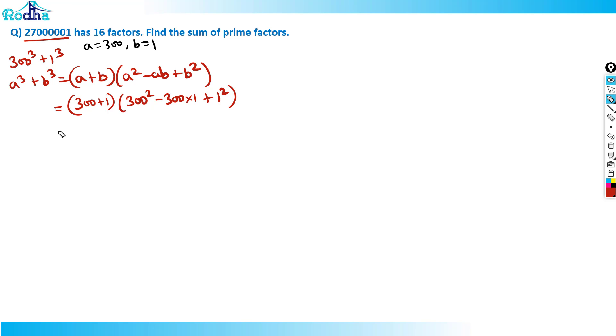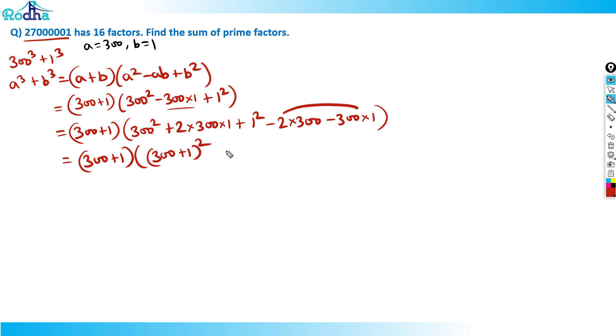So what we'll do now? This 300 plus 1 into 300 square. I'll add twice of 300 and subtract twice of 300. Once I subtract twice of 300, this already was there. This becomes 300 plus 1 into 300 plus 1 whole square minus 900, which is 30 square.